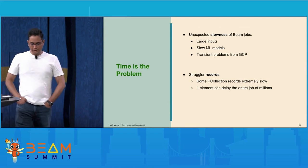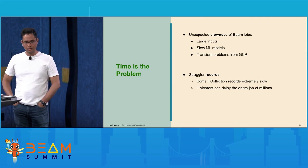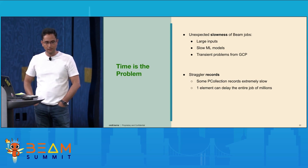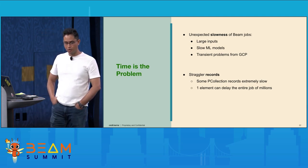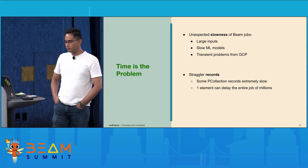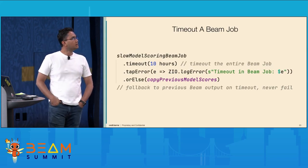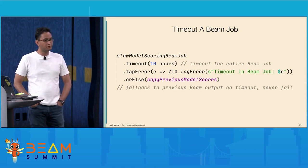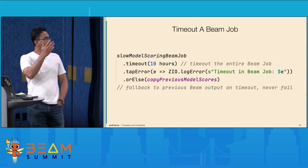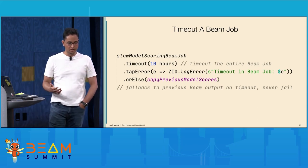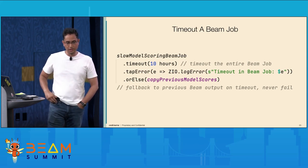What happens if a job goes into a bad state? It normally runs for 30 minutes, but on a given day it's been running for one or two hours and still going. It could be due to bad inputs or a slow ML model that just got deployed. Sometimes it's better to fail, alert on-call, and look into it versus letting it consume resources. ZIO provides a timeout construct. You can set a timeout — say one hour or 30 minutes — and once it times out, you can return default model scores, probably pre-computed from yesterday. Your job doesn't fail your downstream service, and you can go back and investigate why the job was taking longer.